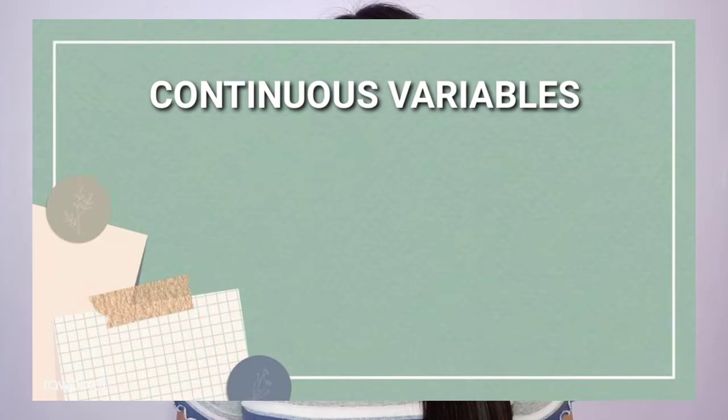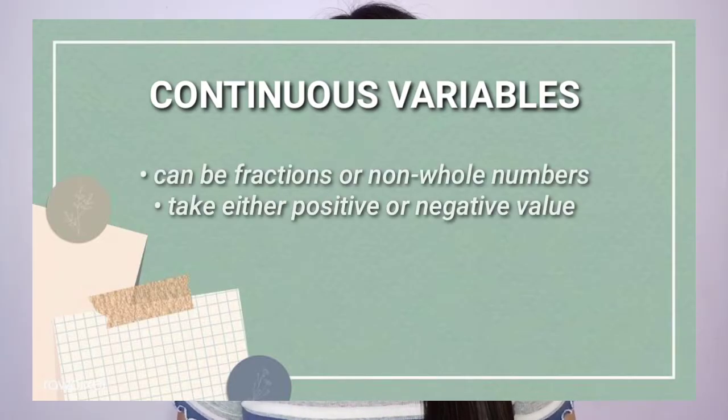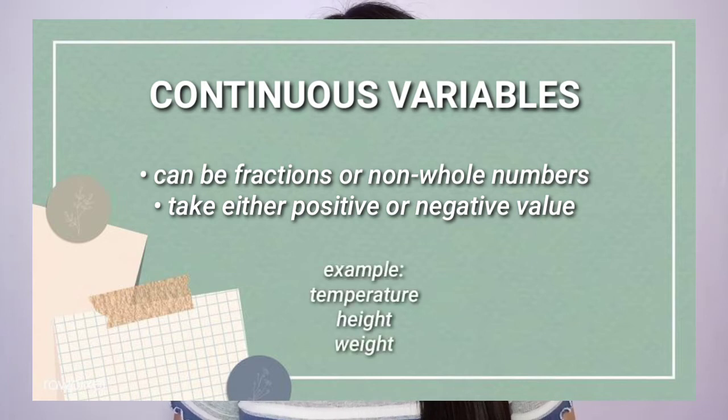On one hand, we have continuous variables, which are also referred to as interval. They are measured in ranges. They can be fractions or non-whole numbers and take either a positive or negative value. For instance, temperature, height, and weight. Temperature can be 36.8. Height can be 165 and one-half centimeters. Weight can be 49.5 kilograms. So these samples can be considered as continuous or interval variables.